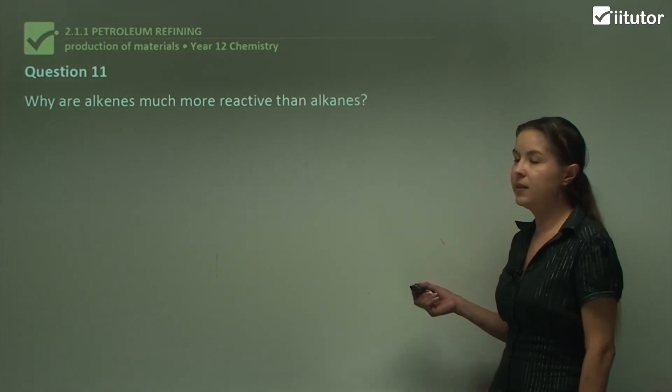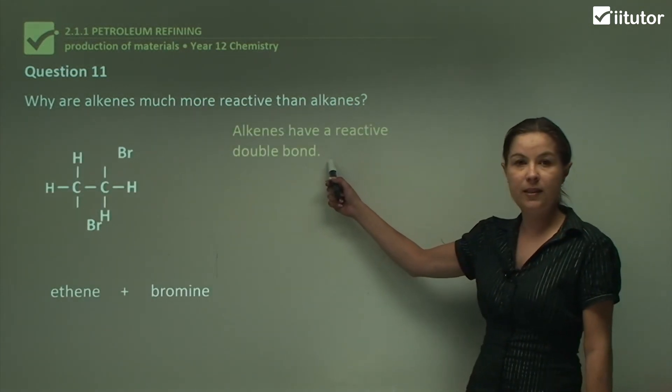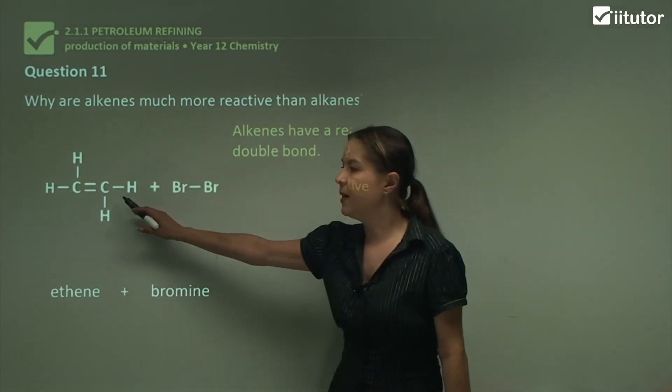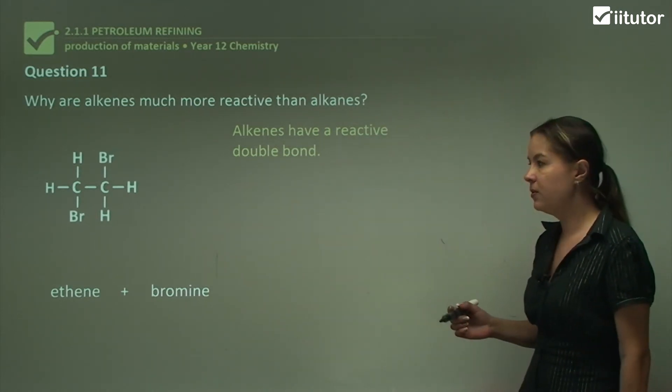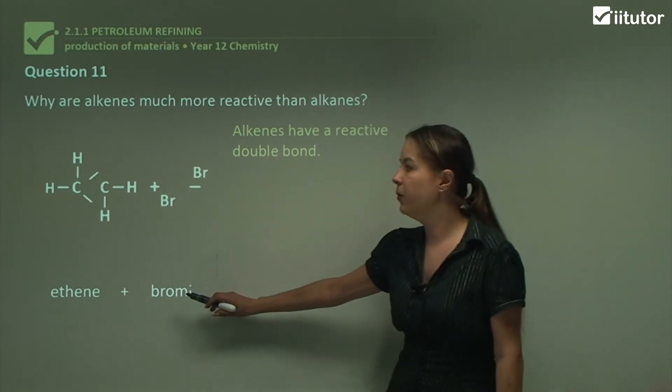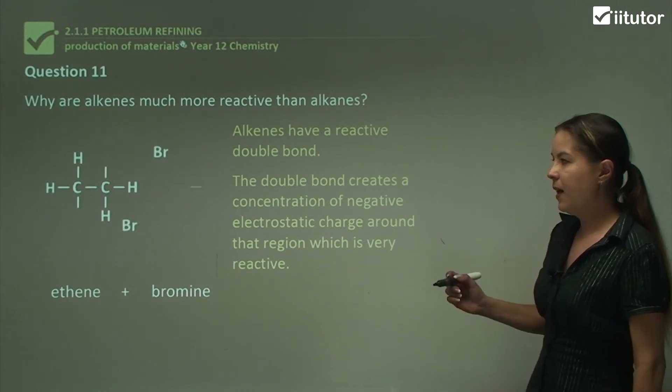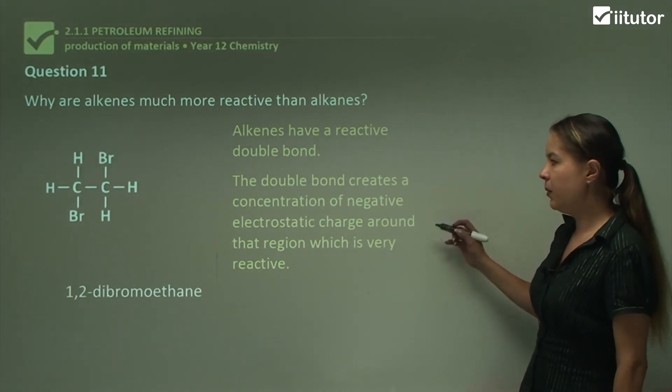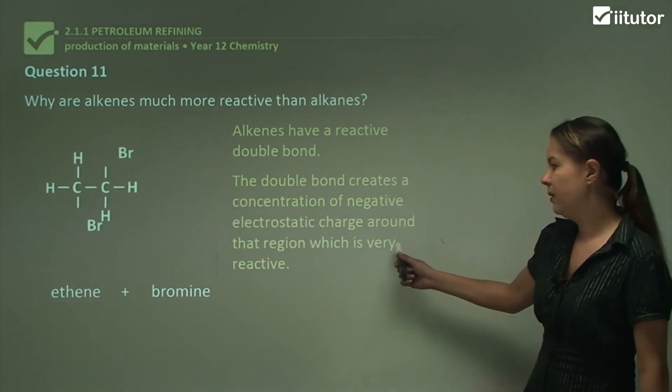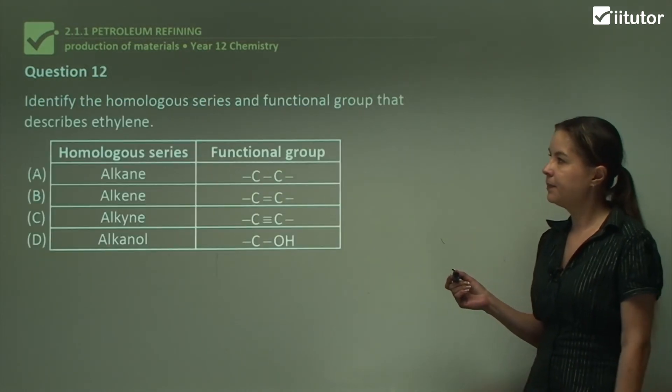Question 11. Why are alkenes more reactive than alkanes? This is because alkenes have a reactive double bond. As you can see from this addition reaction, we can break that double bond and add other molecules over that bond to produce here, for example, 1,2-dichloroethane. As I said earlier in the lesson, the double bond creates a concentration of negative electrostatic charge over that double bond, which means it's very reactive.